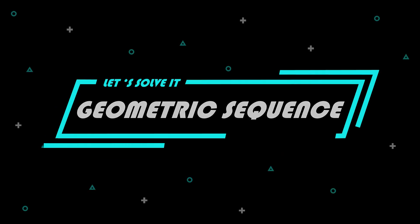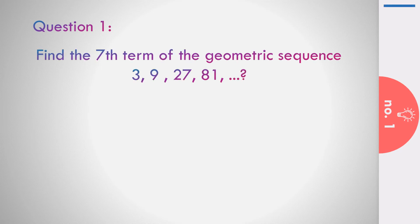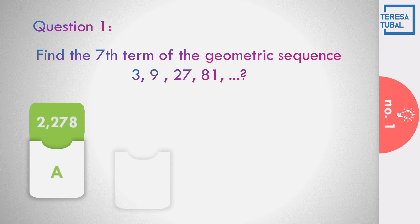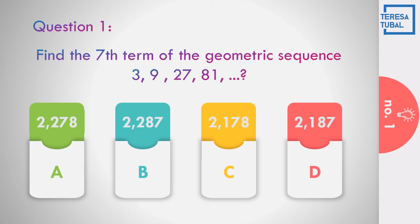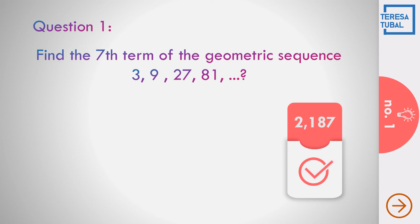Let us solve regarding the geometric sequence. Question number 1: Find the seventh term of the geometric sequence 3, 9, 27, 81. The choices are A) 2,278; B) 2,287; C) 2,178; D) 2,187. The answer is D, equal to 2,187.